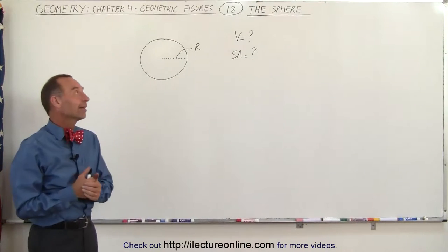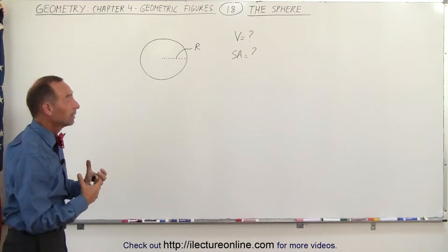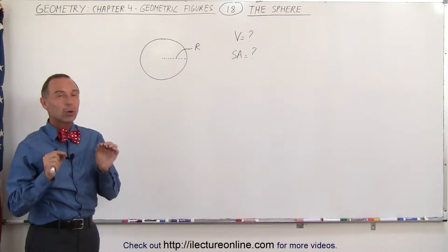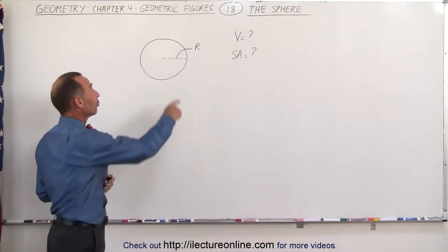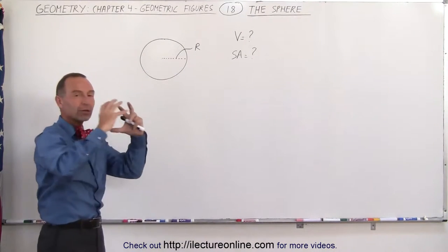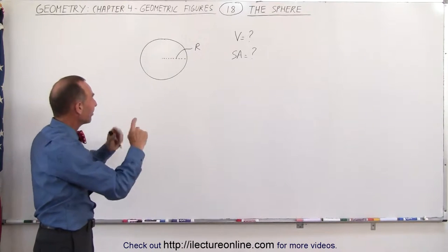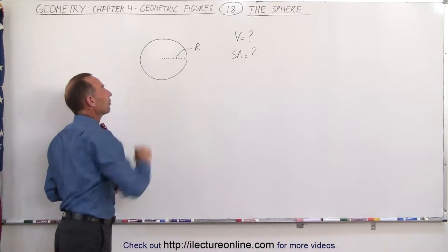Welcome to Electron Line and here let's take a look at this sphere. Now again, just like with the circle, the only thing we need to know about the sphere is the radius because every point on the sphere is equidistant from the very center of the sphere.